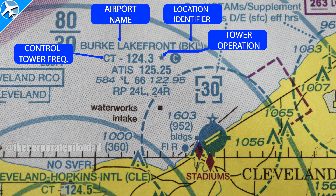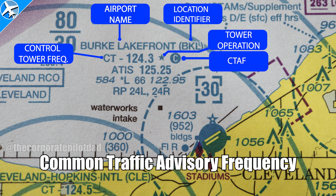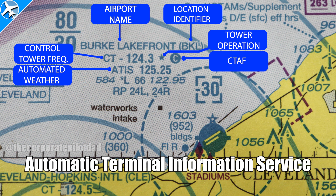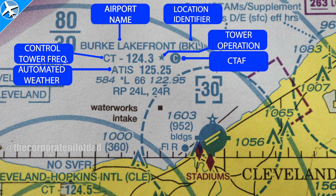The control tower frequency is 124.3 — that's the primary control tower frequency. Large airports like a Class Bravo might have multiple tower frequencies listed. The star refers to part-time tower operation; the chart supplement will give specific hours of operation for ATC services. When the tower is closed, the tower frequency would be used as CTAF, or Common Traffic Advisory Frequency, and position reporting would be just like an uncontrolled airport. ATIS — Automatic Terminal Information Service — would be listened to over the radio prior to arriving and contacting air traffic control.